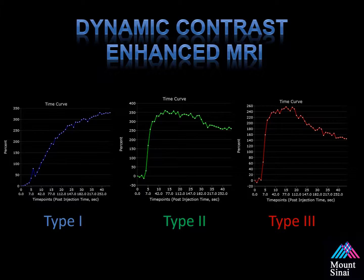Here are the three types of prostate enhancement curves — types 1, 2, and 3. Type 1 is associated with normal prostate. Type 2 has early arterial enhancement without early washout. Type 3 has been shown to be associated with prostate cancer.